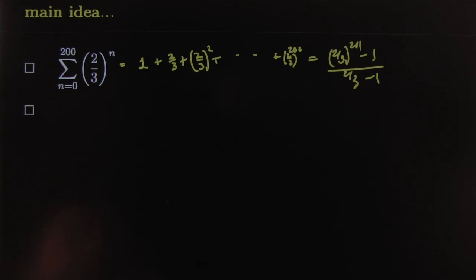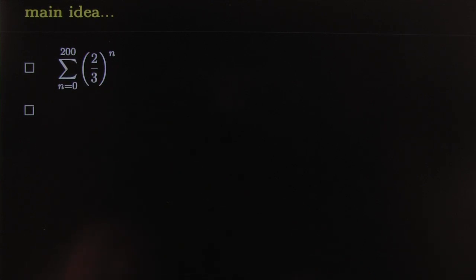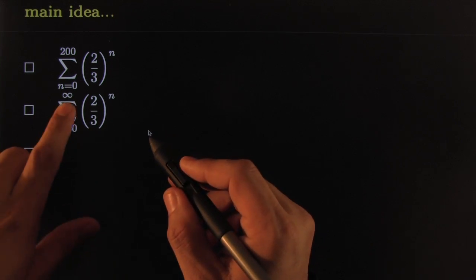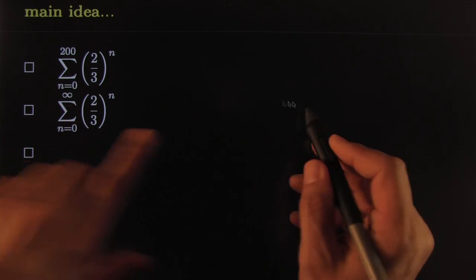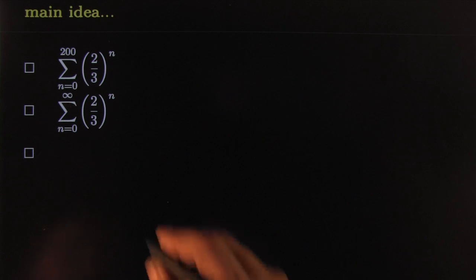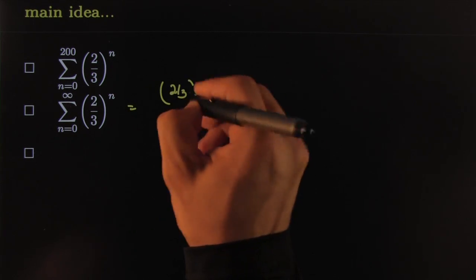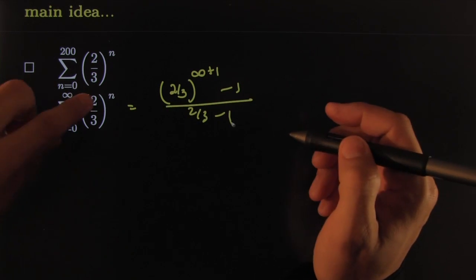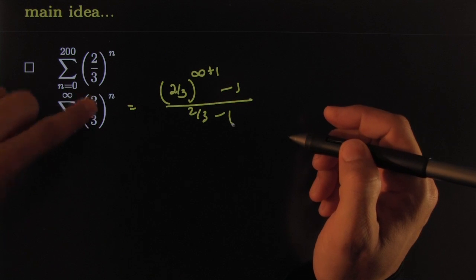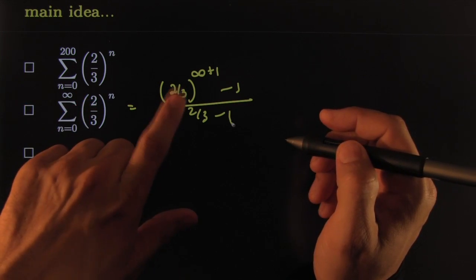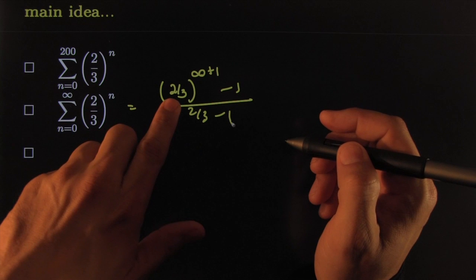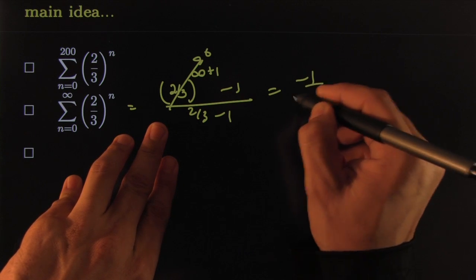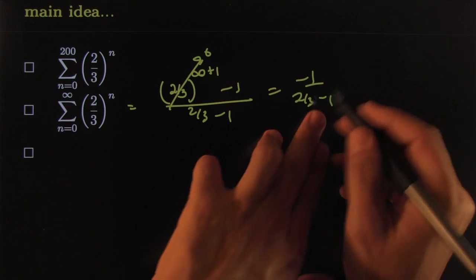There's nothing special about 200 — you could go all the way to infinity, and that just changes one piece of the sum. It would be two-thirds raised to infinity plus one, minus one, all over two-thirds minus one. Since two-thirds is smaller than one, multiplying it by itself repeatedly gives something smaller each time, and doing that infinitely many times makes it go to zero.